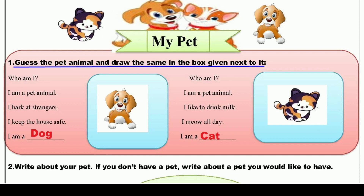So let's read the lines first. Who am I? میں کون ہوں؟ جو میں blue lines لگاتا ہوں، آپ کو لگانے کی ضرورت نہیں کیونکہ یہ صرف میرے سمجھانے کے لئے ہیں۔ I am a pet animal — میں ایک پالتو جانور ہوں۔ I bark at strangers — میں اجنبیوں پر بھونکتا ہوں۔ I keep the house safe — میں گھر کو محفوظ رکھتا ہوں۔ تو بتائیے who am I? یہ ہے ایک dog.